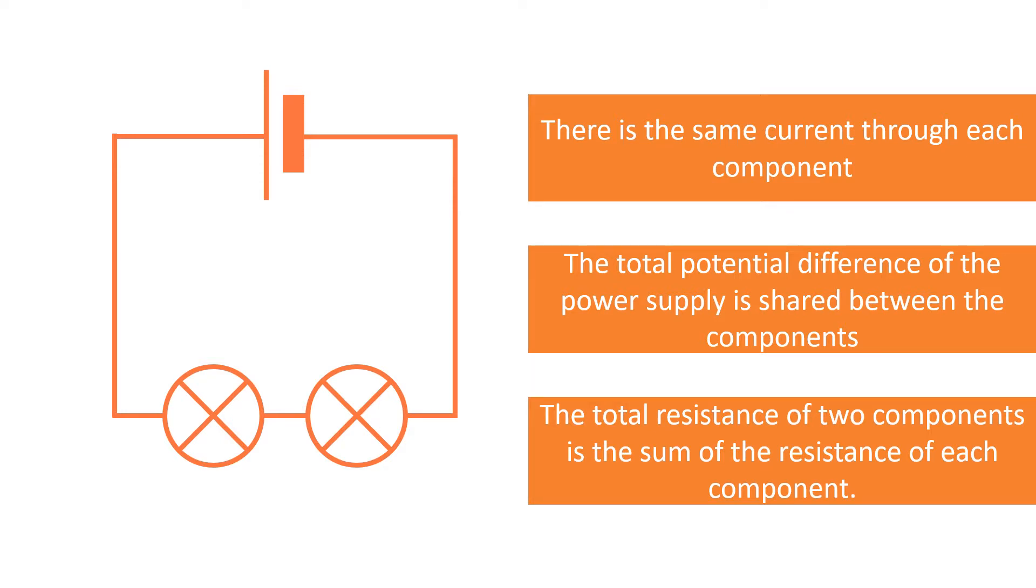So if two components had a resistance of 2 and 3 ohms were connected in series, the total resistance would be 5 ohms.